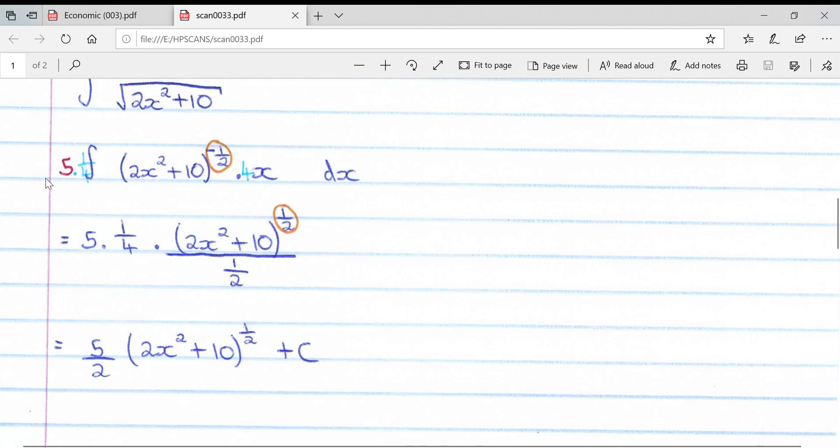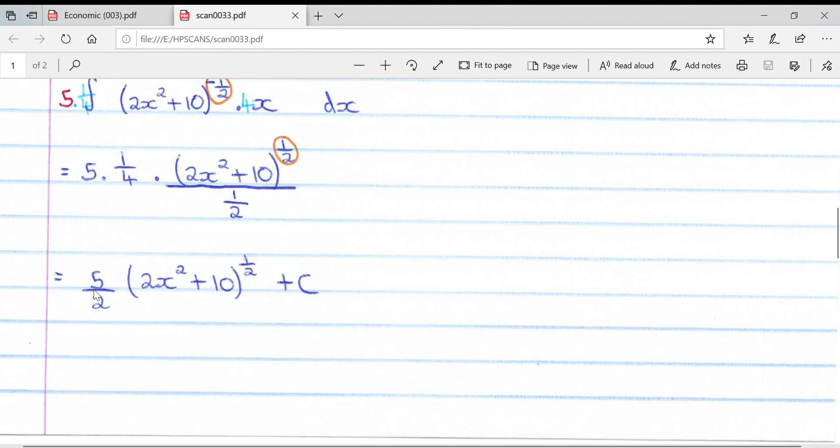Leave your constants on the left-hand side of the integral outside for as long as possible. Because we have the derivative of what's inside the bracket, we can simply drop the original bracket down, add 1 to the power so it goes from negative a half to positive a half, over the number we now have at the exponent, which is a half. If you simplify that all out and multiply the constants together, you'll get 5 over 2 multiplied by 2x squared plus 10, all to the power of a half, then plus c.